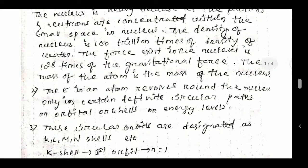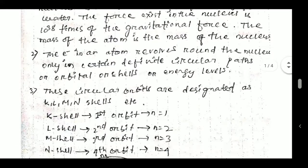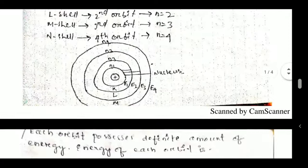Next postulate: Electrons in an atom revolve around the nucleus only in certain definite circular paths, also called orbits, shells, or energy levels. Electrons revolve in fixed orbits and do not alter their orbits. These circular orbits are designated as K, L, M, N shells, etc., where the K shell refers to the first orbit where n = 1, and n refers to the number of orbits or energy levels.